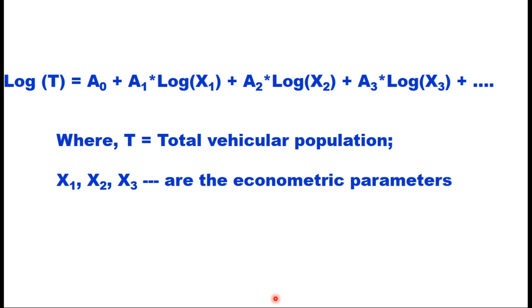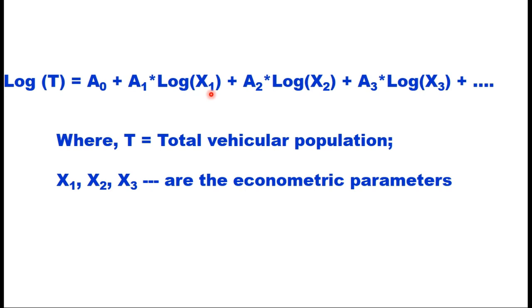The equation is: log(T) = a0 + a1 × log(X1) + a2 × log(X2) + a3 × log(X3) + and so on, where T is the total vehicular population and X1, X2, X3 are the econometric parameters. a0 is a constant, and a1, a2, a3 are regression coefficients representing the elasticity of each parameter — indicating how the total vehicle population will increase with respect to each of these parameters.